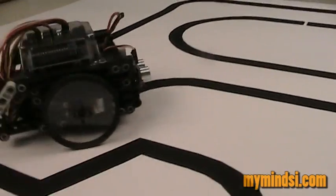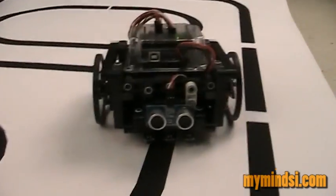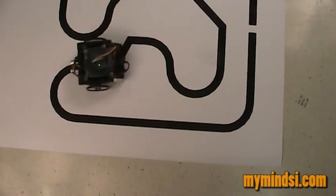The line follower uses light sensing QTI sensors which allow it to follow a line, like in this line following course.